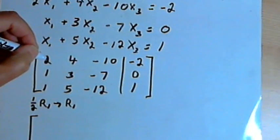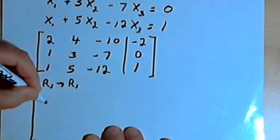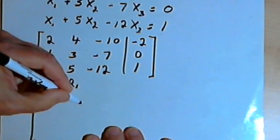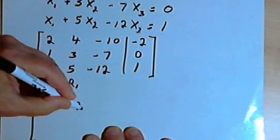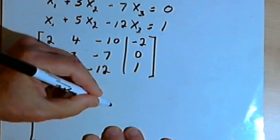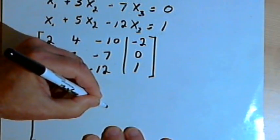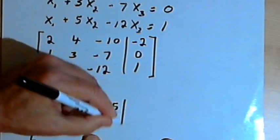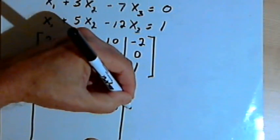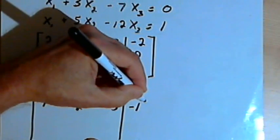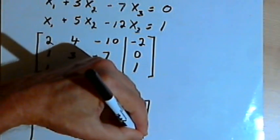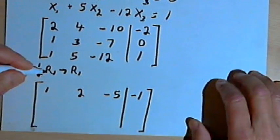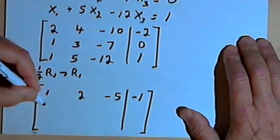One-half times 2 is 1, one-half times 4 is 2, one-half times negative 10 is negative 5, and one-half times negative 2 is negative 1. Then I just copy over the other two rows.